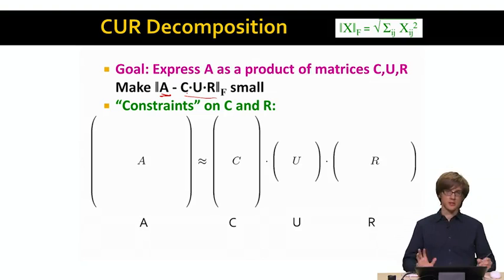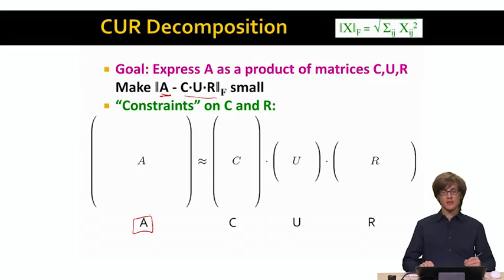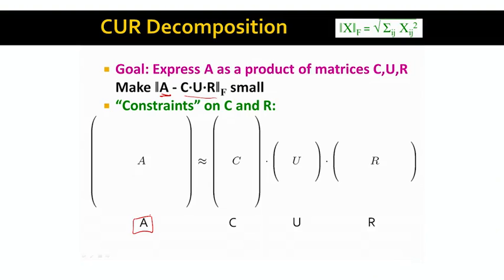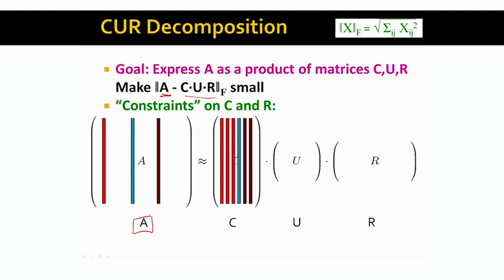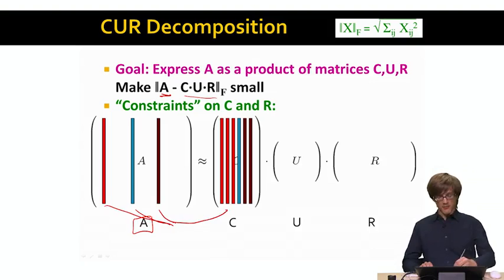We are given matrix A as an input and we want to express it as a product of three special matrices C, U, and R. As with singular value decomposition, we will put some constraints on the structure of matrices C and R. The constraint on matrix C is that it has to contain columns from matrix A. We will choose carefully, using some algorithm, a set of columns from matrix A and put those into matrix C. So our matrix C is simply a set of columns from A.